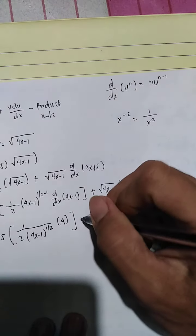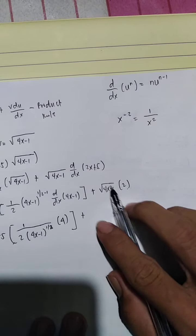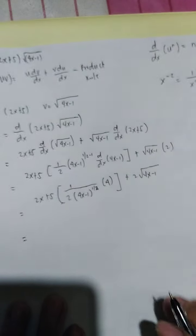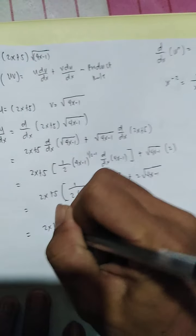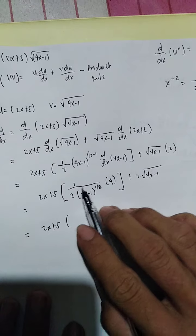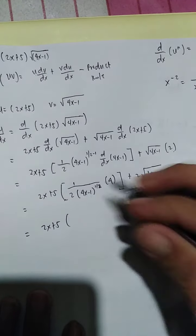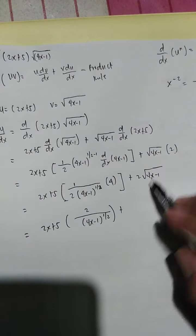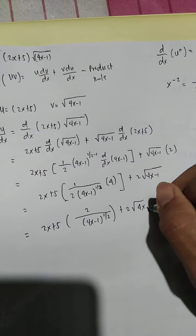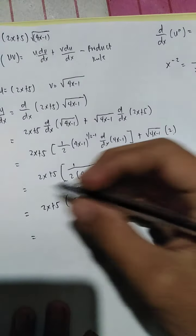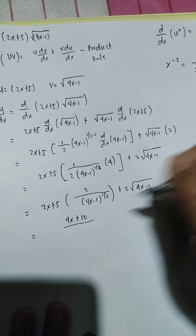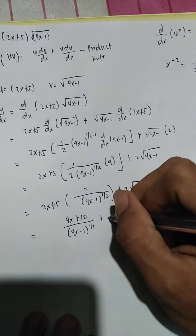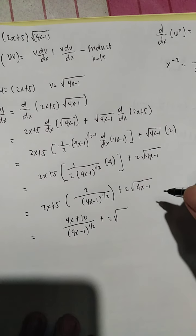Let us continue with our expression. We have plus square root of 4x minus 1 times 2, giving 2 times the square root of 4x minus 1. Now let us simplify: 2x plus 5 times 4 divided by 2, over (4x minus 1)^(1/2), gives (4x plus 10) over (4x minus 1)^(1/2), plus 2 times (4x minus 1)^(1/2).